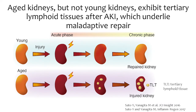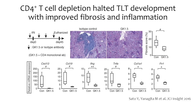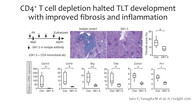Previously, we have shown that aged kidneys but not young kidneys exhibit tertiary lymphoid tissue after AKI, which underlies maladaptive repair. Tertiary lymphoid tissue is an inducible ectopic lymphoid tissue that generates adaptive immune responses to locally presented antigens. We also found that CD4-positive T-cell depletion in a kidney disease model halted TLT development with improved fibrosis and inflammation. However, the cells and molecular pathways that govern TLT formation are poorly defined.